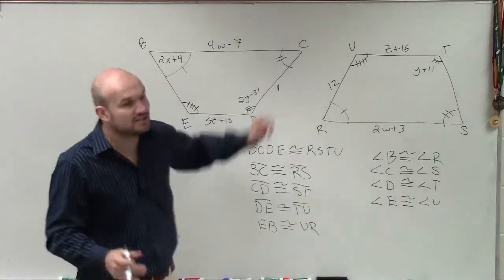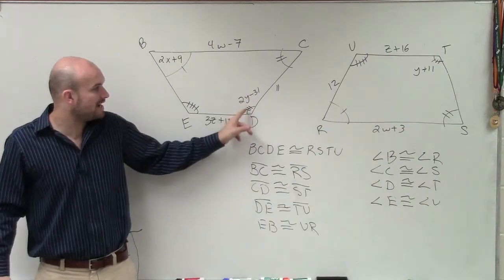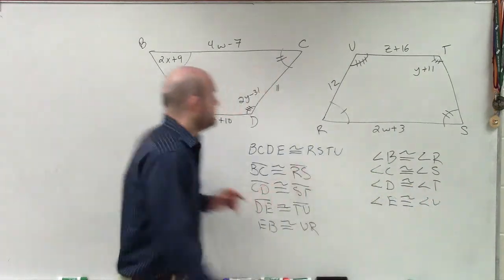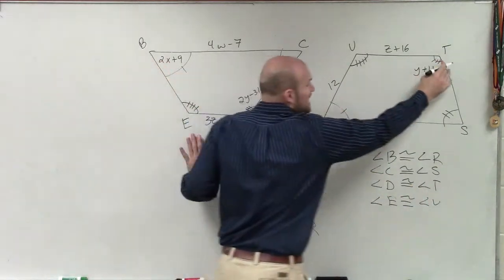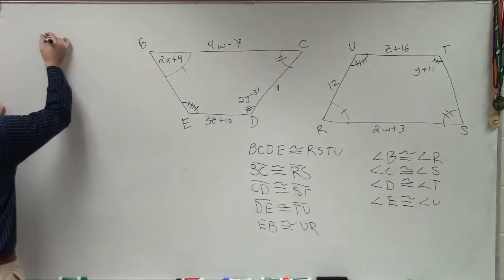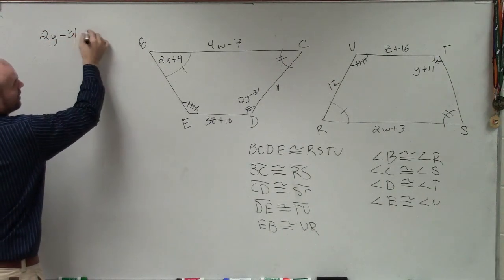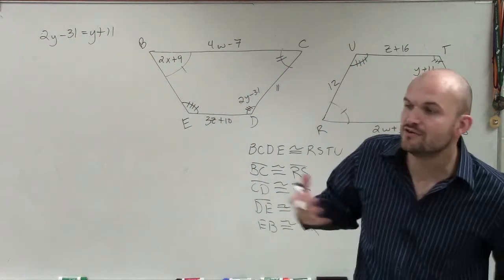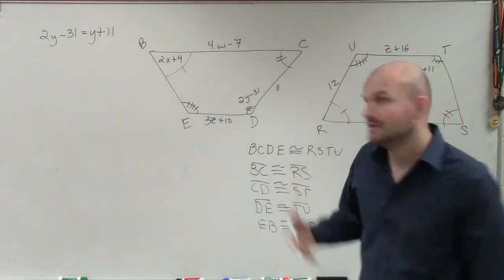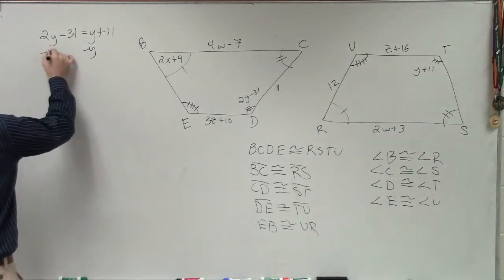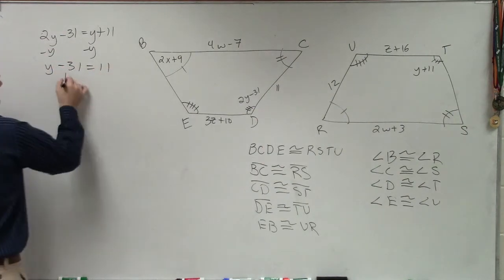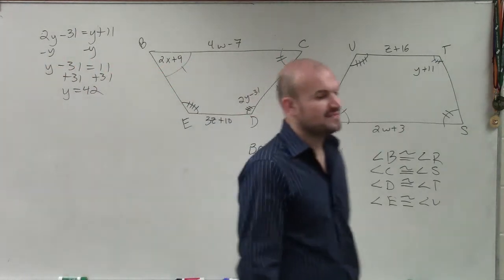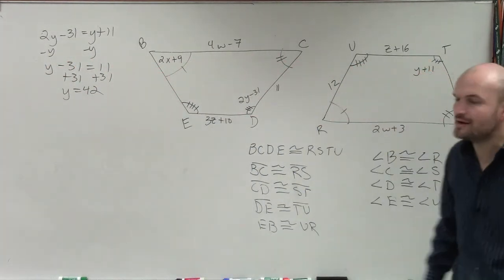So what's important, if I want to find out the value of Y, I look at this and I say, all right, this angle D is congruent to angle T. Therefore, this angle measure is equal to that angle's measure. So to find Y, I can write 2Y minus 31 equals Y plus 11. Now I can set up an equation because their values are equal in measure. Now I just simply need to solve for Y. So I subtract a Y, and I get Y minus 31 equals 11. Add 31 on both sides. Y equals 42.